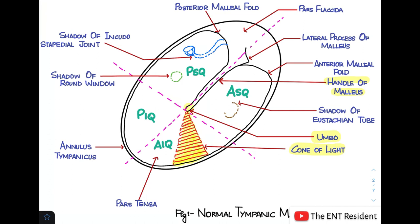Over here is the lateral process of the malleus. These two things are the anterior and the posterior malleal folds. There are some structures which you can see — or may not see — via the tympanic membrane; these are structures of the middle ear. This over here is the shadow of the eustachian tube, this here is the shadow of the round window, and this structure here is the stapes and the incus. This region is the shadow of the incudostapedial joint. These three structures sometimes may be visible via the tympanic membrane, but you may not always be able to see them.